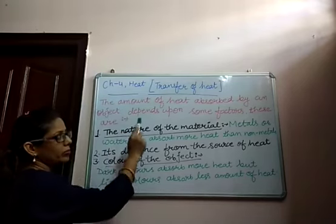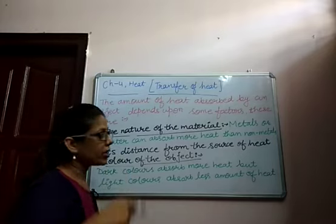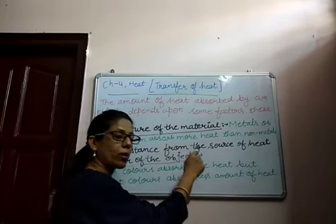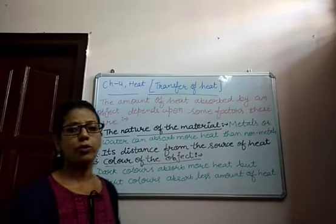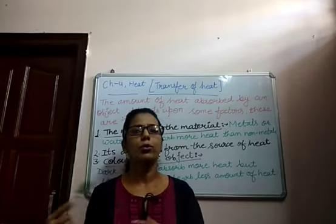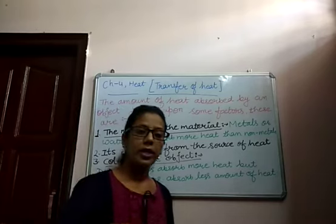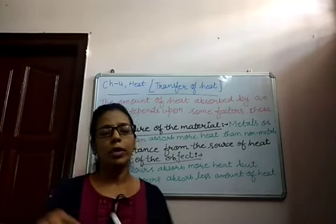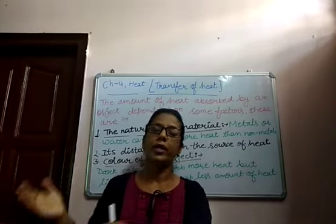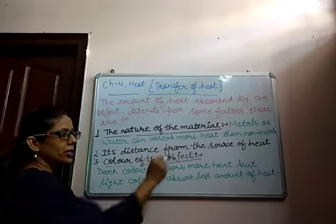The amount of heat absorbed by an object depends upon some factors. The first is the nature of the material. Different materials absorb different amounts of heat. Metals and water absorb more heat compared to non-metals. For example, copper, aluminium, and iron are metals, so they absorb more heat. The second factor is distance from the source of heat. When an object is very near to the source of heat, it absorbs a maximum amount of heat. But when an object is very far away, it absorbs very less heat.